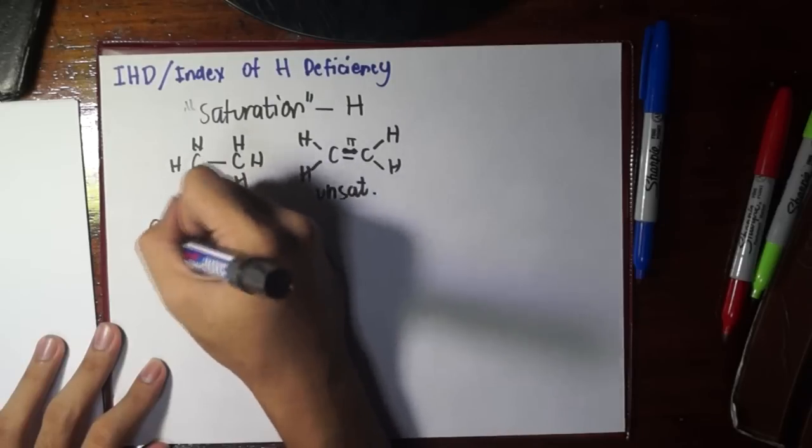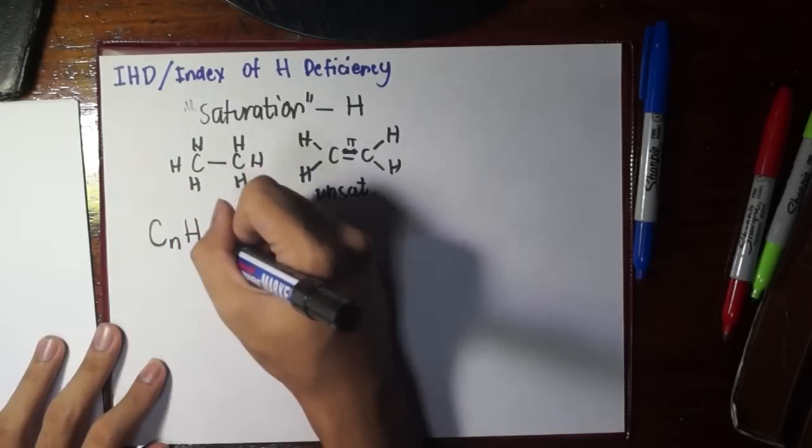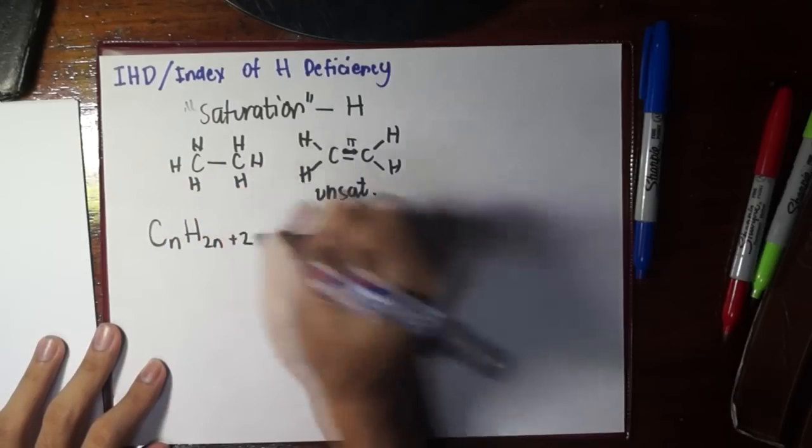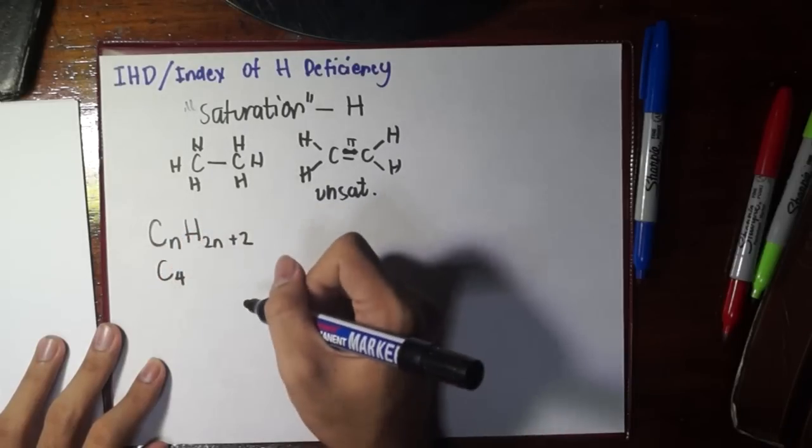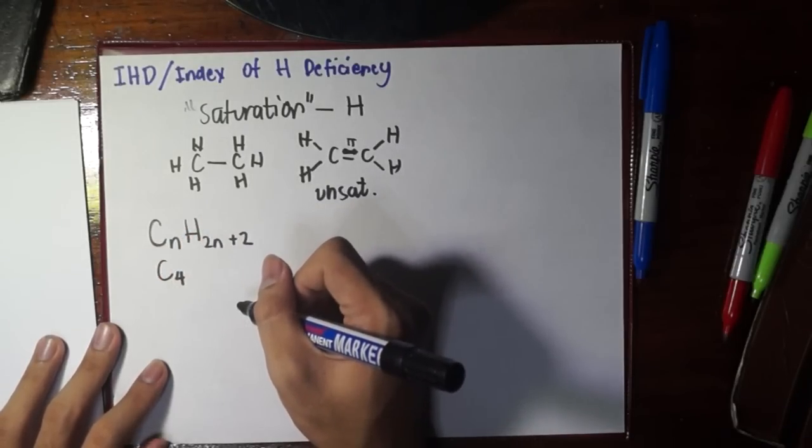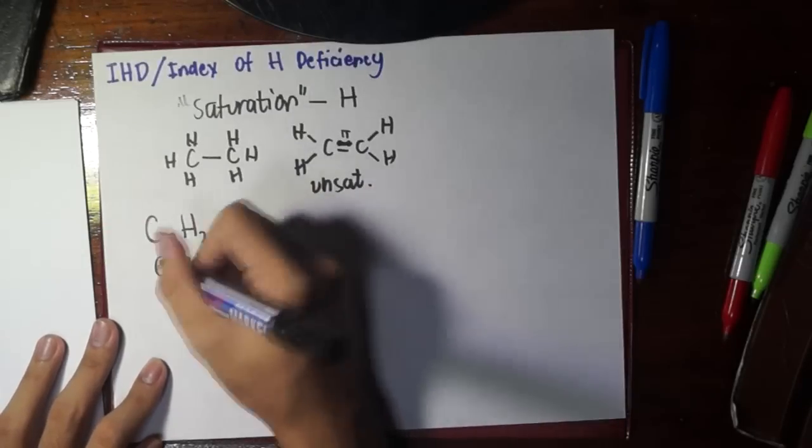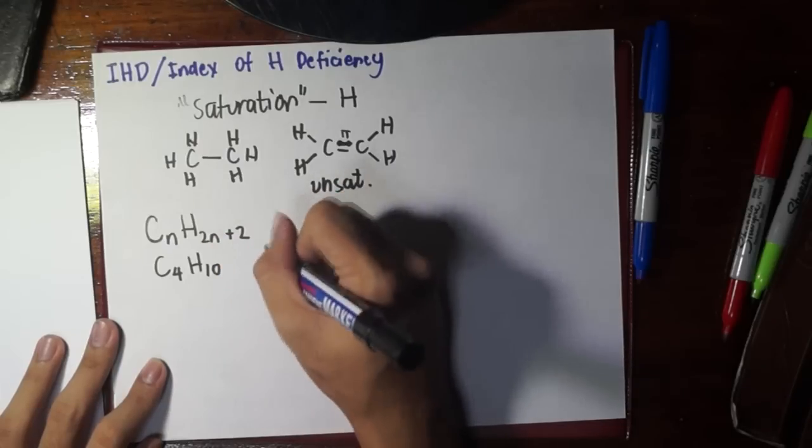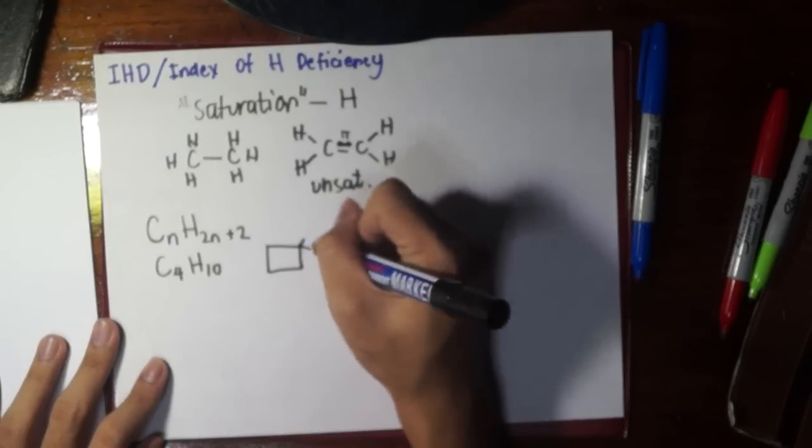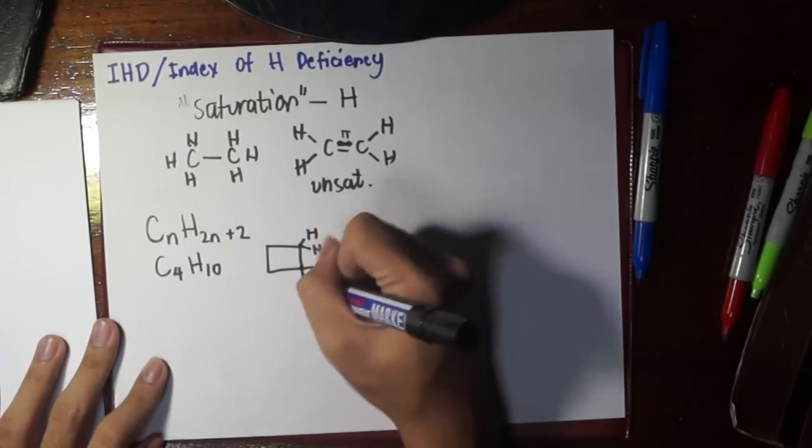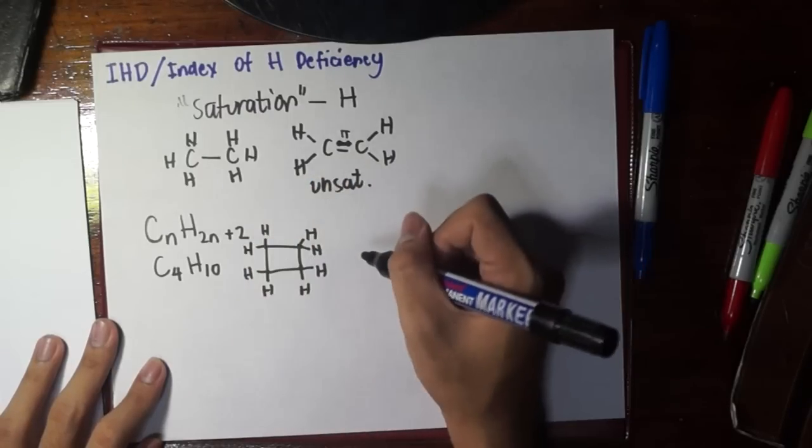Let's recall the general formula for alkanes: CnH2n+2. For example, if we have C4, then 2n is 4 times 2 which is 8, plus 2 is H10. This is the formula for butane. But if we make a ring, this is cyclobutane. Each carbon should have two hydrogens to complete four bonds per carbon.